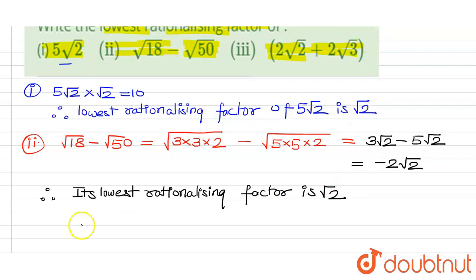Now, let us come to the third one. It is given as 2 root 2 plus 2 root 3. We can take 2 common, so we get 2 multiplied by (root 2 plus root 3). Its rationalizing factor is root 3 minus root 2.